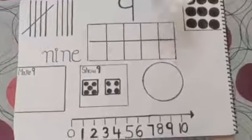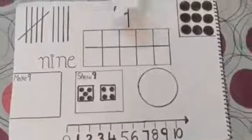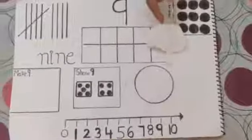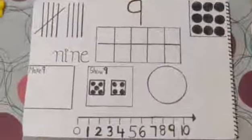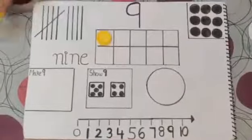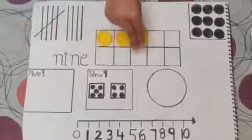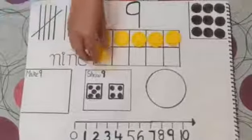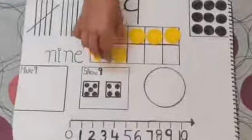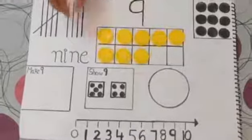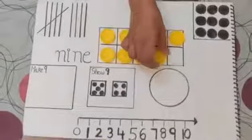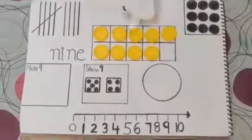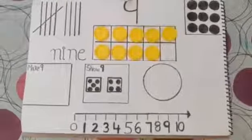Let's count the counters and place them in the ten frame. One, two, three, four, five, six, seven, eight, nine. Nine counters. Nine.